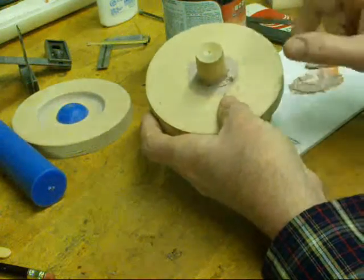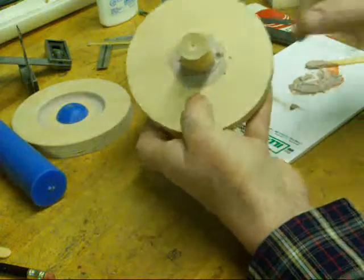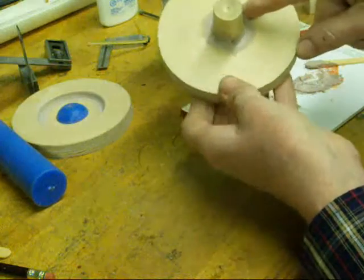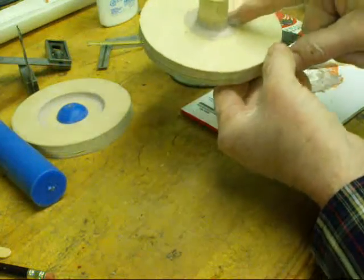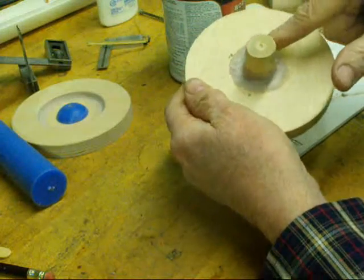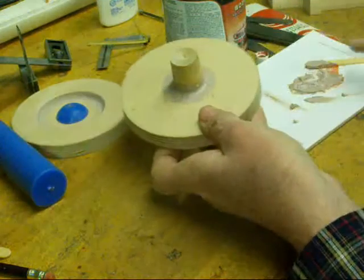And once you've got enough in there, wipe off the excess, and just wipe it around like that, and you're going to get a reasonably good fillet, kind of like frosting a cake.